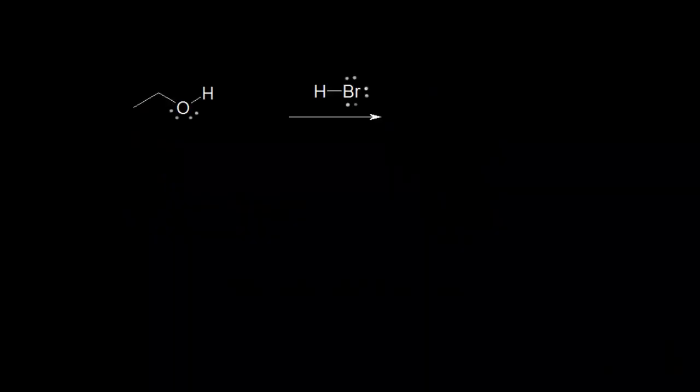Let's look at a few nucleophilic substitution reactions of alcohols, assuming you've seen SN1 and SN2 mechanisms before. Let's start with a primary alcohol — ethanol. It's a primary alcohol because the carbon bonded to the OH is bonded to one other carbon. Primary alcohols react with HBr to form an alkyl bromide via an SN2 process.